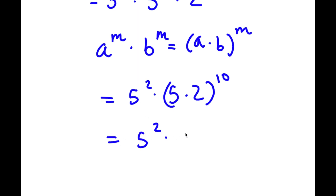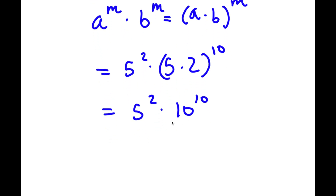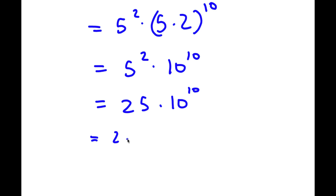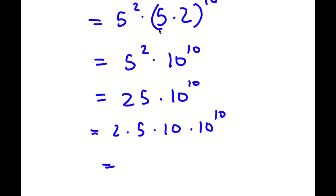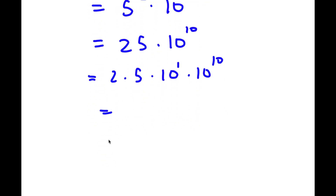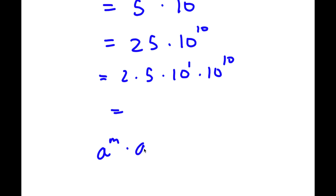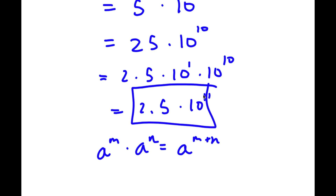So 5 times 2 is 10, giving 5 squared times 10 to the power of 10. Now 5 squared equals 25, so I have 25 times 10 to the power of 10. And 25 is the same as 2.5 times 10, so I have 2.5 times 10 times 10 to the power of 10. Since 10 equals 10 to the power of 1, using the rule a to the power of m times a to the power of n equals a to the power of m plus n, I get 2.5 times 10 to the power of 11. That's my answer in scientific notation form.